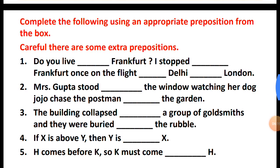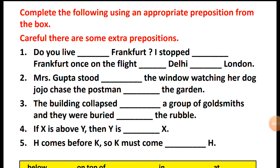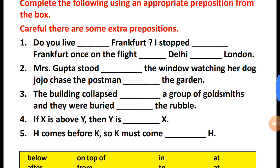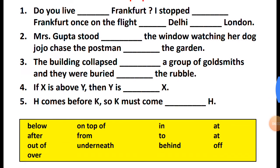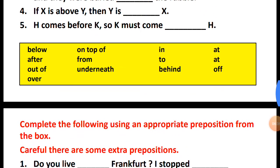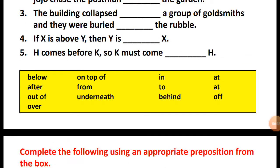If X is above Y, then Y is — dash — X. H comes before K, so K must come — dash — H. The prepositions to choose from are: below, on top of, in, at, after, from, to, at, out of, underneath, behind, off, and over.